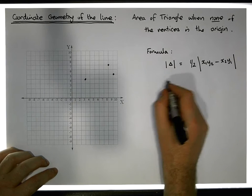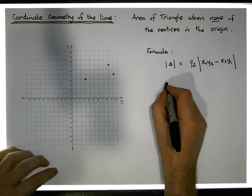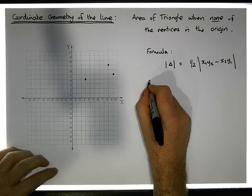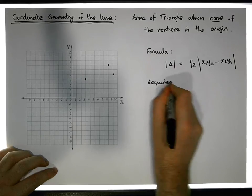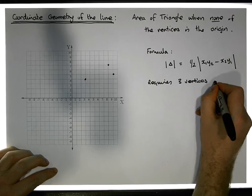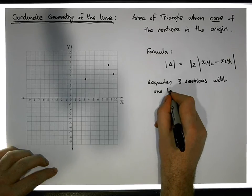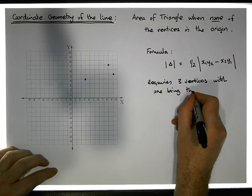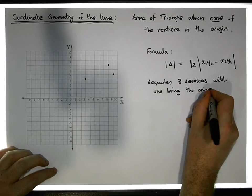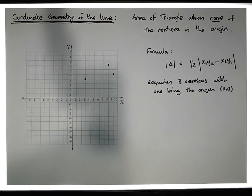The thing about this formula is that it requires three vertices where one of the vertices is the origin. So we require three vertices of the triangle with one being the origin—one of the vertices needs to be (0,0).